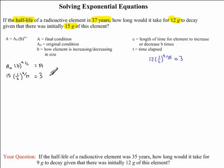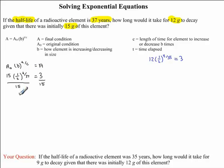Moving back to the question we were working on together, we now have to isolate for t. First, we divide each side by 15. So 15 divided by 15 is 1, leaving us with (1/2)^(t/37) = 3/15. We can reduce this fraction — 3 goes into numerator and denominator equally, giving us 1/5. So we have (1/2)^(t/37) = 1/5.